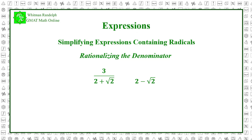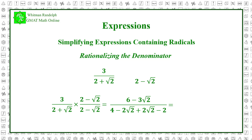When we multiply by the conjugate, the root sign is canceled out. 3 over (2 plus the square root of 2), times (2 minus the square root of 2) over (2 minus the square root of 2), equals 6 minus 3 times the square root of 2, over 4 minus 2 times the square root of 2 plus 2 times the square root of 2 minus 2, and that equals 6 minus 3 times the square root of 2, over 2.